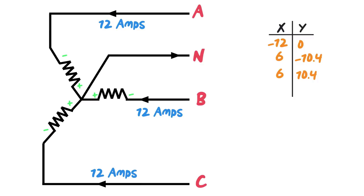Then we get our last one here. So we've got negative 12 times the cos of 240 gives you 6. Negative 12 times the sine of 240 gives you 10.4.